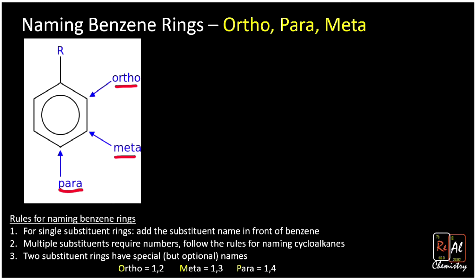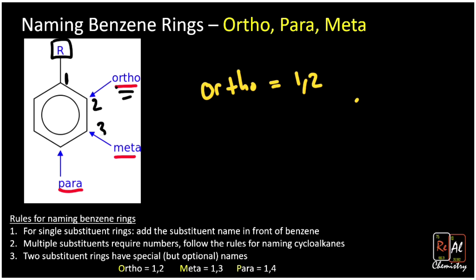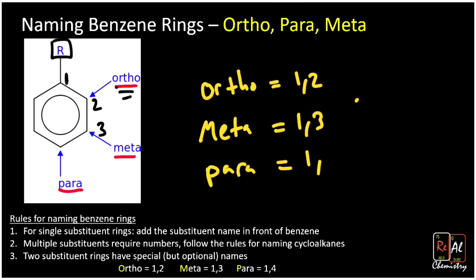We can use numbers or we can use the words ortho, meta, and para, which indicate the position of our substituents. 'R' represents our first substituent. If we have another substituent at the second position we call that ortho — ortho replaces 1,2. If we have something at the first and third position, meta replaces 1,3. If we have something at the first and fourth position, we use para.